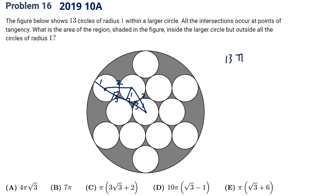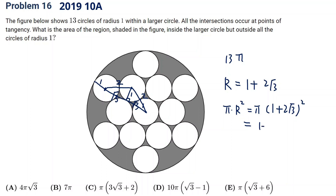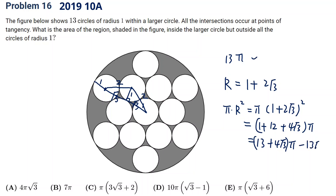So the big circle area is pi times r squared, which is pi times (one plus two root three) squared. Expanding: one squared plus 12 plus 2 times 1 times 2 root three gives 13 plus 4 root three, times pi. Then minus 13 pi gives the answer: 4 root three times pi.